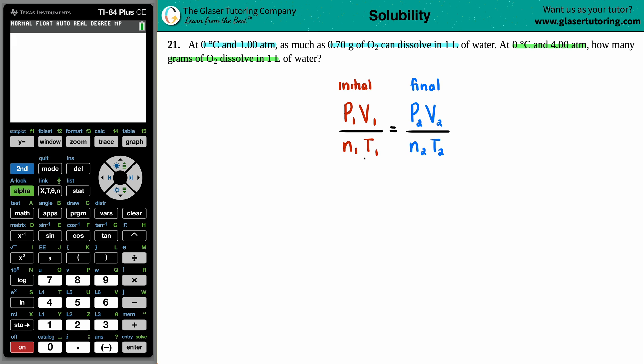Now always get rid of units or variables that do not change. Now in this case, they told us at zero degrees Celsius, and then they said at zero degrees Celsius. So there was no change in the temperature. So get rid of the temps. Goodbye. Anything else that didn't change? Well, they said that we had one liter and then we were asking again in one liter. So no change in volume. We say goodbye.